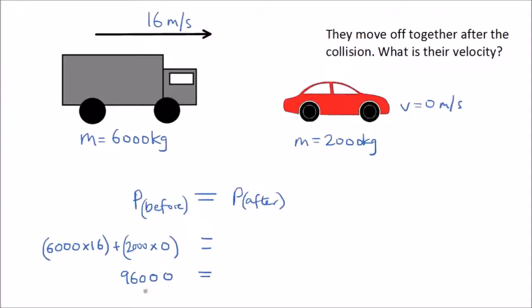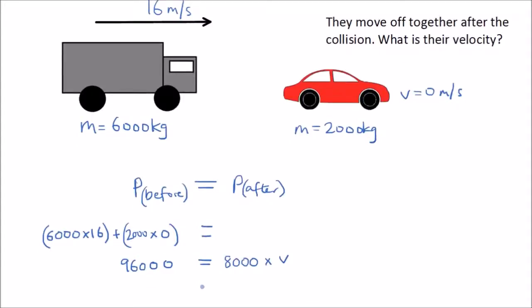That means there must be the same amount of momentum after. The combined mass afterwards is 6,000 plus 2,000 — 8,000 kg because they move off together — multiplied by the velocity V, which we are trying to find. If we divide both sides by 8,000, V comes out to 12 meters per second. So after the collision, when they both move off together, they travel at 12 meters per second.